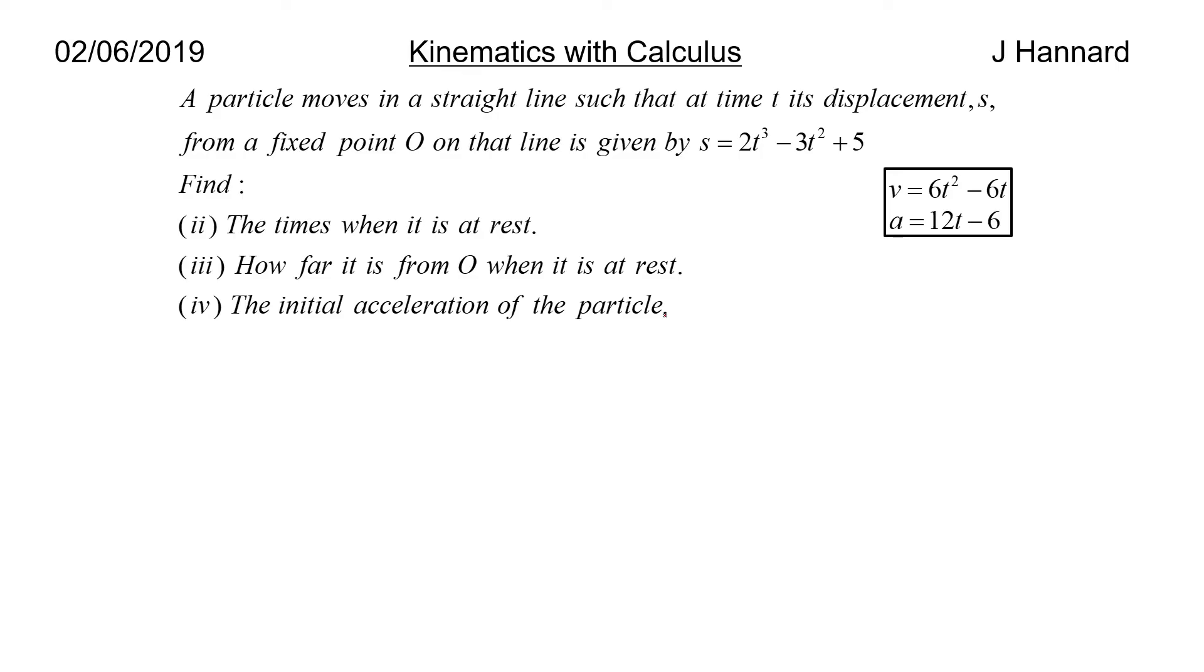Part two, the times when it is at rest. We've got our formulas for v and a there. So what does rest mean? That means it's not moving, that means its velocity is zero. So we check out the times when the velocity is zero. We set our v equal to zero and we get 0 = 6t² - 6t, which is 6t(t - 1). So the times are zero and one. Don't fall into the trap of cancelling a t off and losing a solution there.